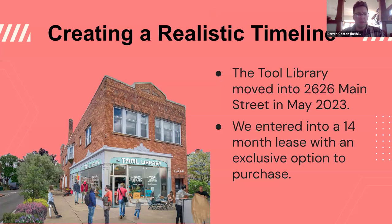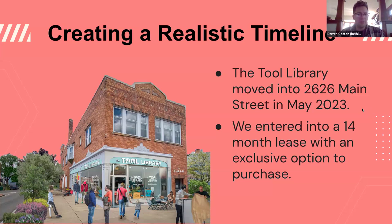We just kind of lucked out that we found a building that really worked for us, and that the owner was willing to do a lease-to-own arrangement at the end of that lease. So we had a timeline already built in where we had 14 months to essentially start at zero and work our way up to $500,000, which was the purchase price for the building. If I could go back and do it all over again, if I could have double that amount of time, would I? Absolutely. But sometimes that sense of urgency does help with encouraging people to support your campaign.